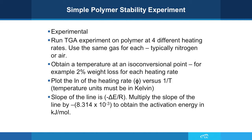The slope of the line is going to be equal to minus delta E over R. So multiplying the slope of the line by minus 8.314 times 10 to the minus 3, which is our gas constant, we obtain the activation energy in units of kilojoules per mole.